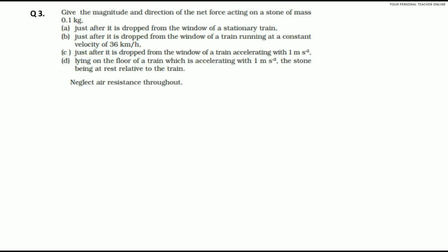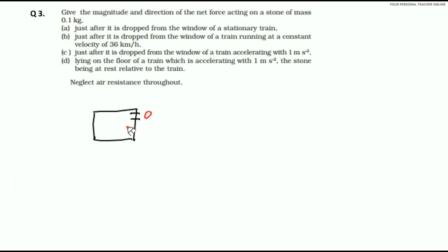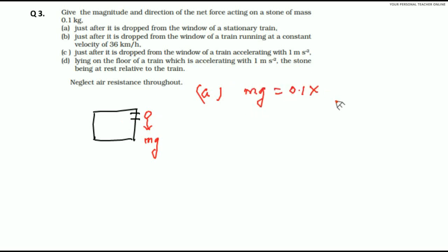Question number 3: give the magnitude and direction of the net force acting on a stone of mass 0.1 kg just after it is dropped from the window of a stationary train. Suppose there is a train that is stationary and you drop the stone from the window. Mg will act in the downward direction and because the train is not moving there is no acceleration, so net acceleration due to the train is 0. In the first case, only mg acts in the downward direction. So, m into g equals 0.1 kg into 10.